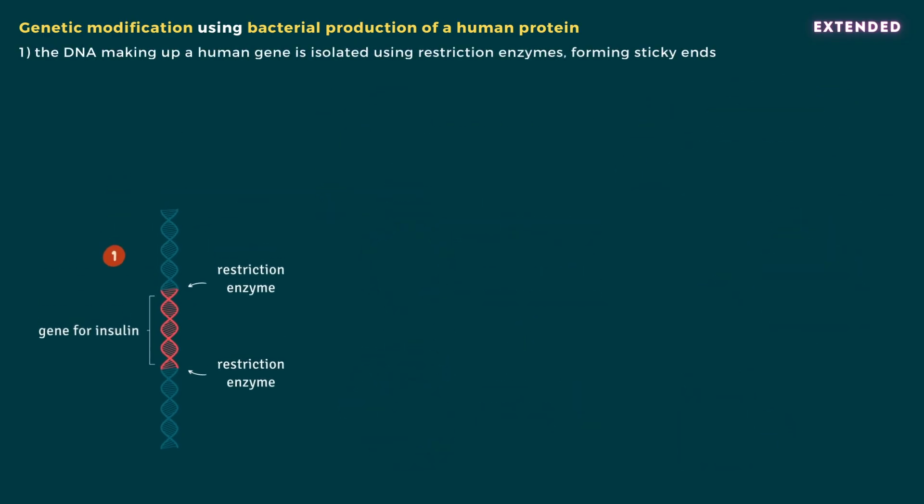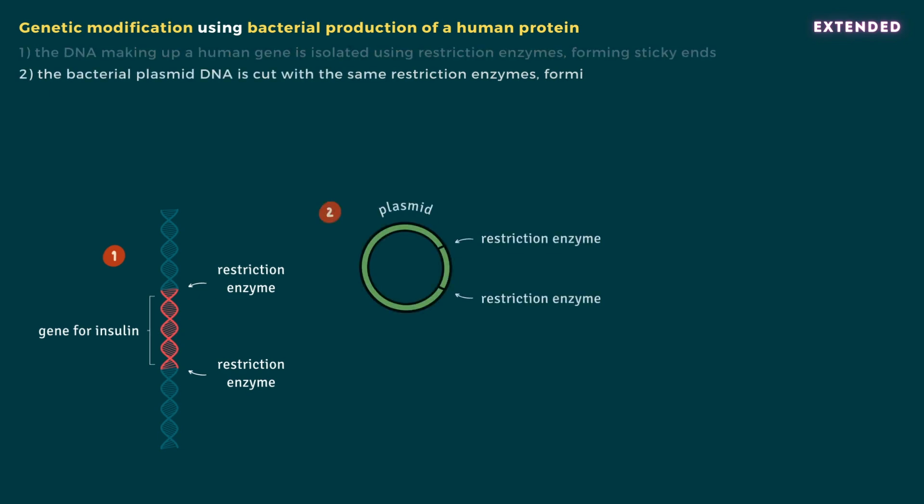Step 1: The DNA making up the human gene — in this case the gene for insulin — is isolated using restriction enzymes, forming sticky ends. Step 2: The bacterial plasmid DNA is cut using the same restriction enzymes, forming complementary sticky ends.